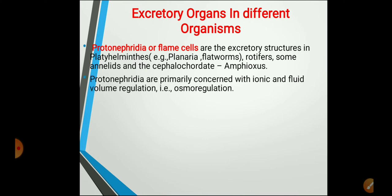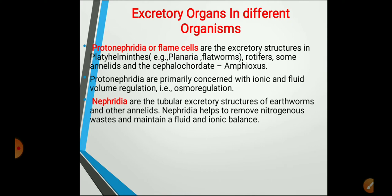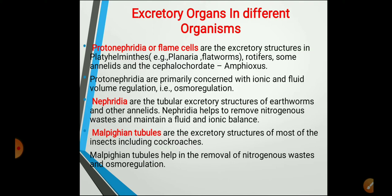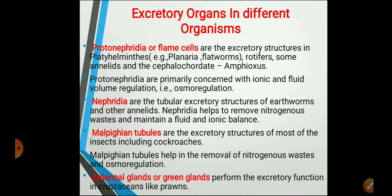The function of protonephridia is to help in ionic and fluid volume regulation — in other words, osmoregulation and water balance of the body. The next excretory organ is the nephridia — tubular excretory structures found in annelids, especially earthworms. Nephridia help to remove nitrogenous waste and also maintain fluid and ionic balance. The third type is Malpighian tubules — excretory structures found in most insects including cockroaches — which help in removal of nitrogenous waste and osmoregulation.